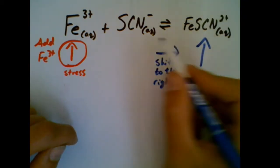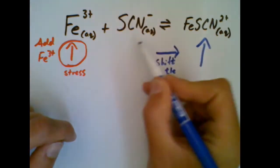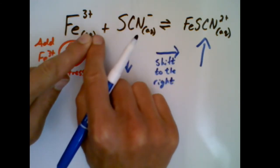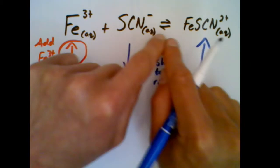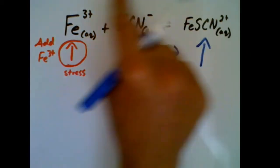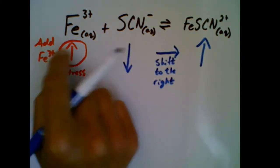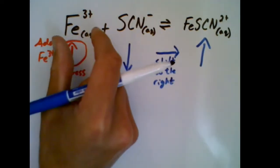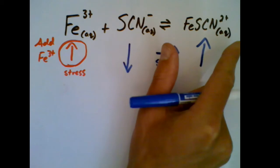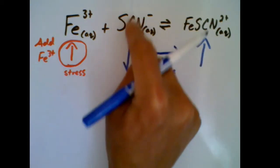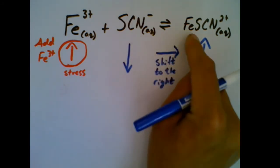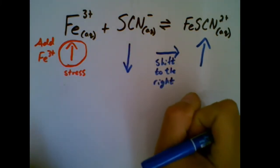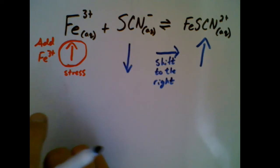As it starts producing more product, it uses up SCN⁻ in order to do so — the SCN⁻ reacts with Fe³⁺ and turns into FeSCN²⁺. Remember, this is all in one big container. You dump everything in together, and that speeds up the forward reaction, shifts to the right, produces more FeSCN²⁺, and uses up the SCN⁻. This continues until the new rates become equal again — all because we added one substance to the system.